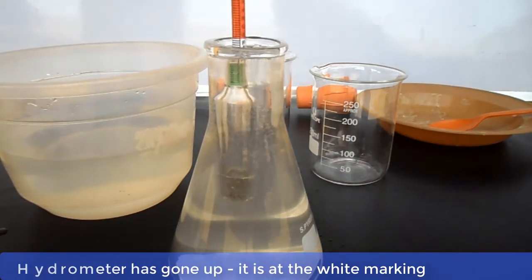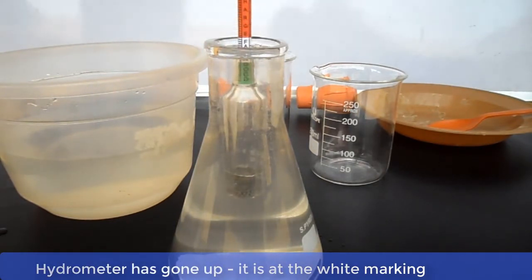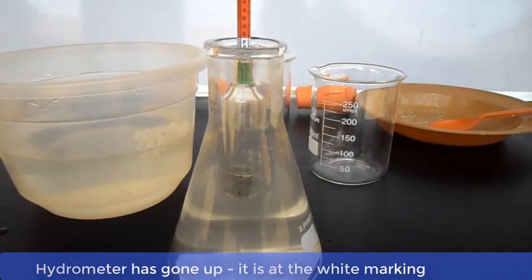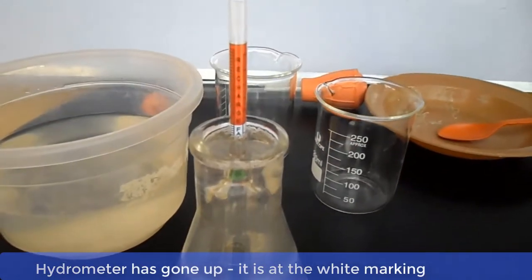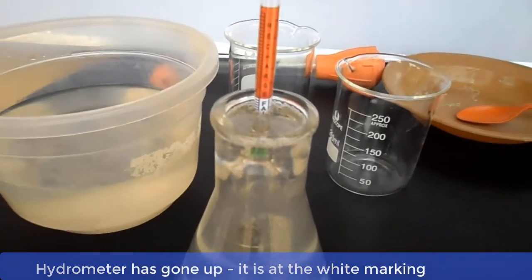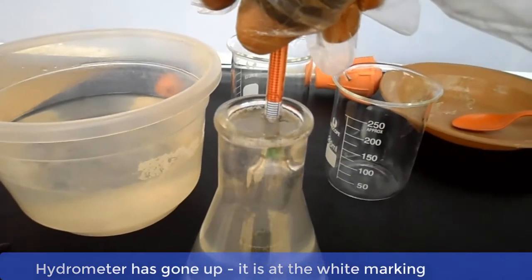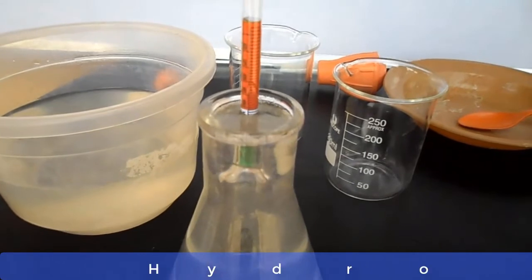Well, as you can see, there is an improvement. The hydrometer has gone up and it is at the white marking. Remember, our benchmark is 1275, which is the green marking. So let's add more caustic soda to the solution.